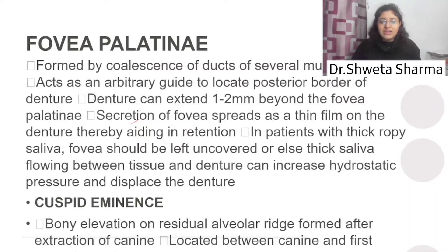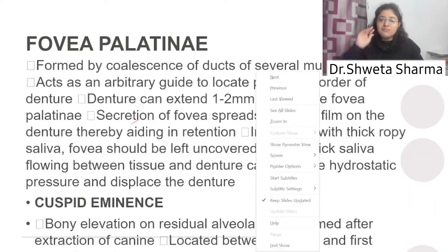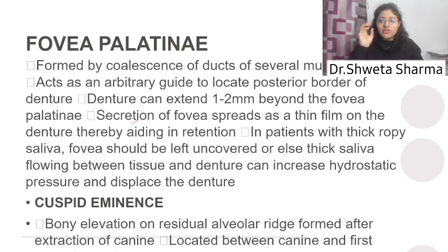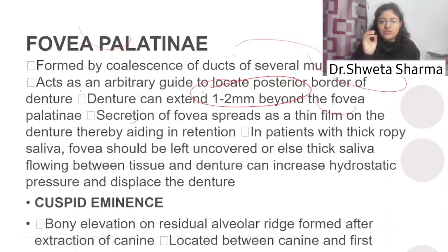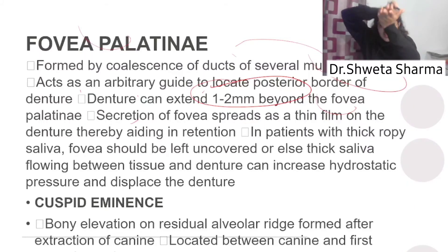The third relief area is the fovea palatinae. These are just two small depressions formed by the coalescence of ducts of several mucous glands. There are many mucous glands whose ducts open here. These act as arbitrary guides to locate the posterior border of the denture. They are open due to mucous secretion, and with a complete denture in place, they aid in retention.